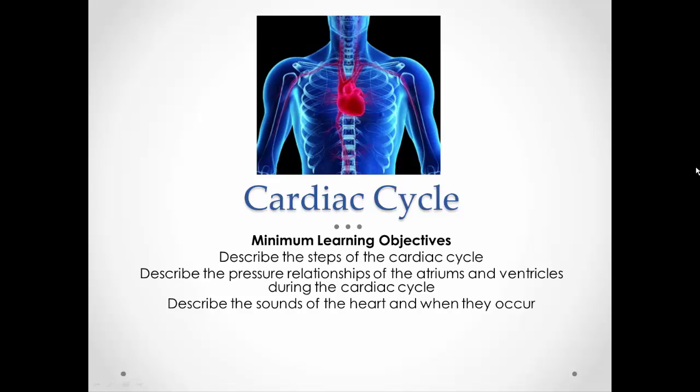Now let's look at the cardiac cycle — that is how the blood moves through the heart with each heartbeat. This involves several steps and pressure changes that occur in the atriums and ventricles in order to move the blood from one chamber to the next or out into the arteries. The valves ensure blood goes in the correct direction, and the proper closing of those valves produces our heart sounds.